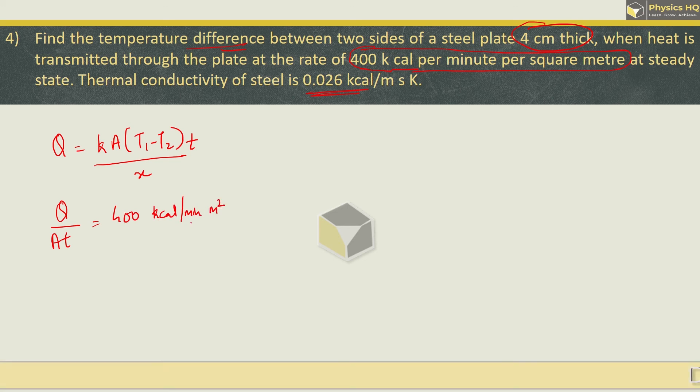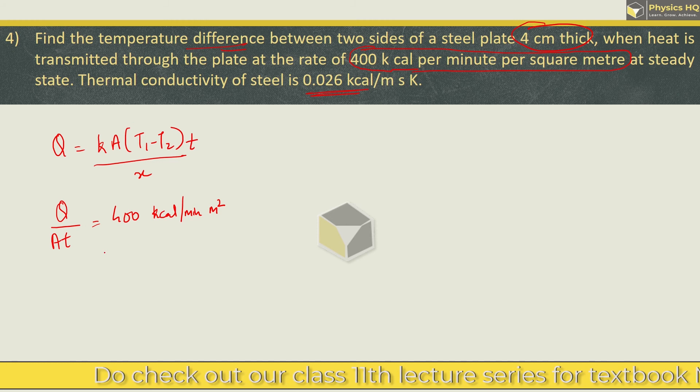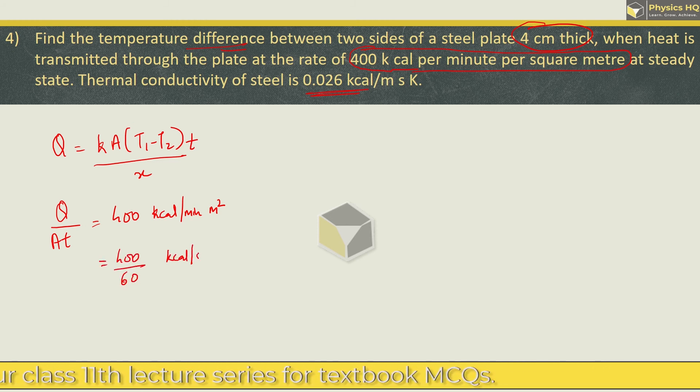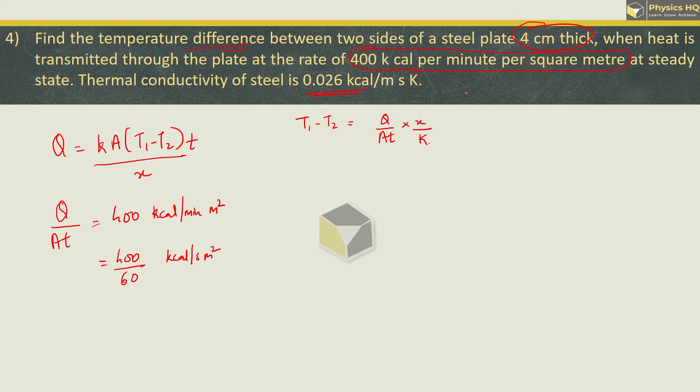We need to convert to seconds, so this will be 400 by 60 kilo calorie per second meter square. We are supposed to find the difference in temperature which is T1 minus T2. This will be equal to Q upon At into x by k. Putting all values: Q upon At we got as 400 by 60, x value is 4 centimeter which in meters is 4 into 10 raised to minus 2, k value thermal conductivity given is 0.026.